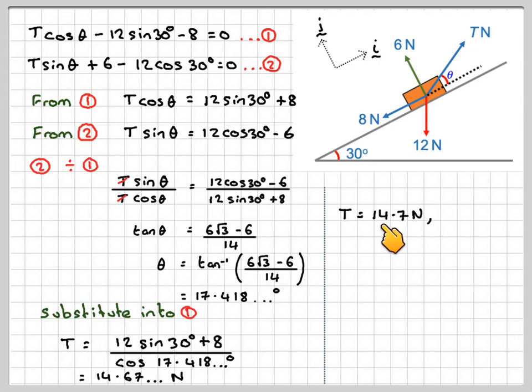And therefore, the tension was 14.7 newtons, and the angle here is going to be 17.4 degrees. So this has been a video to show you how to find the two unknowns when resolving a force up a slope when the block is in equilibrium. I hope you've understood, and I thank you very much for watching.